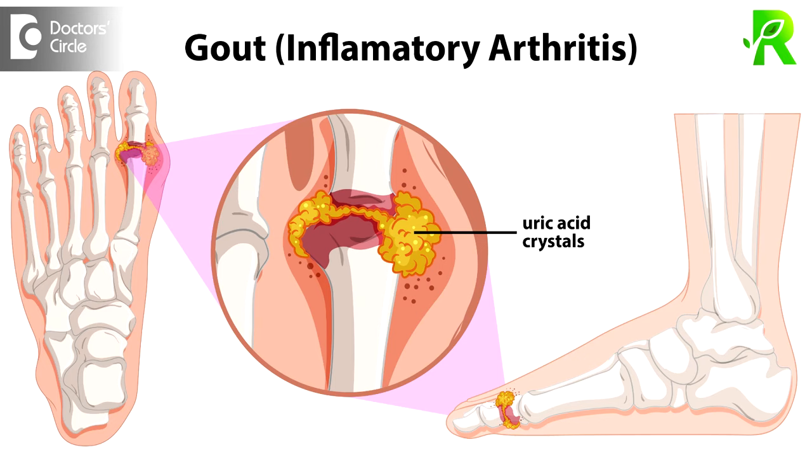In gouty arthritis, uric acid levels increase — more than 6 on a blood test. It is generally seen in the feet, ankle joint, and toes, and can occur at any age. Psoriatic arthritis occurs in those who have psoriasis, where stiffness is more prominent than pain. Infectious diseases like dengue fever can also cause joint pains.